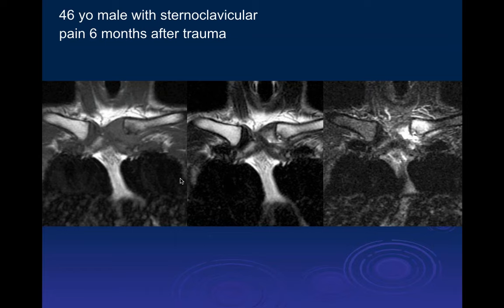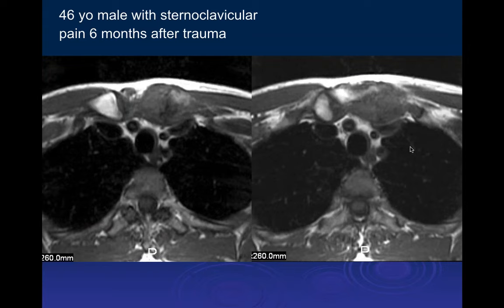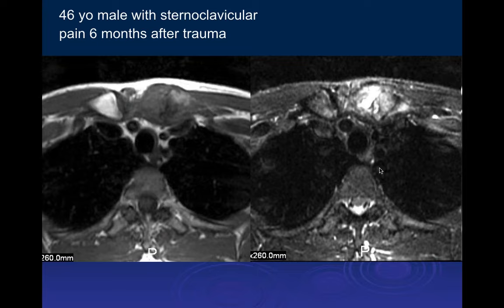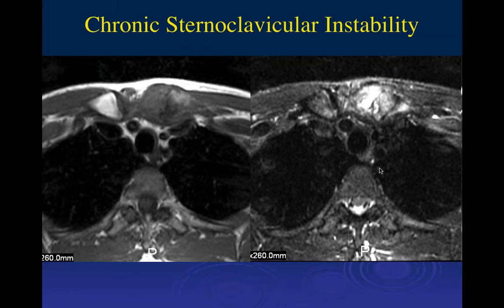46-year-old male with sternoclavicular pain six months after trauma. On multiple coronal T1, T2, and PD fat-sat images, there is erosion and irregularity along the inferior aspect of the left clavicle with bone marrow edema and adjacent fluid at the sternal-manubrial articulation, with prominent irregular soft tissue hypertrophy extending into the anterior mediastinum.